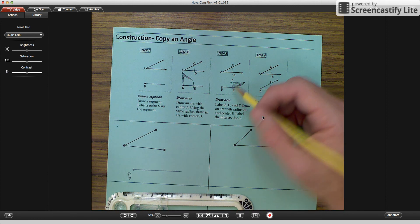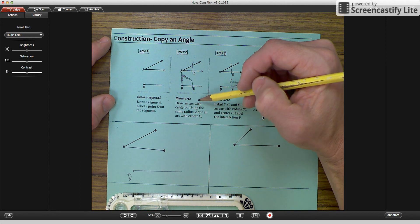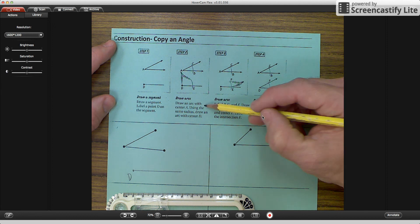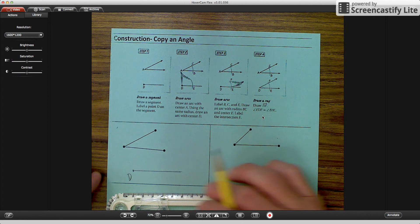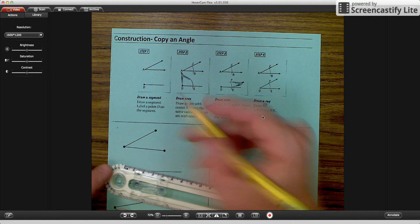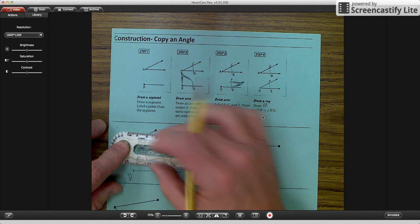Second thing, step two says draw arcs. Draw an arc with center A using the same radius, draw an arc with center D. So I'm going to go up here and I'm going to label it A and I'm going to draw an arc.